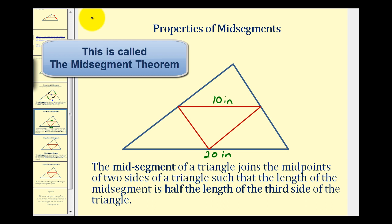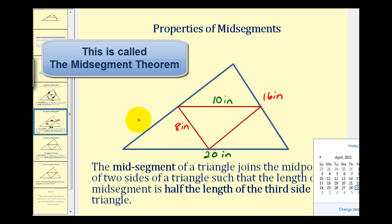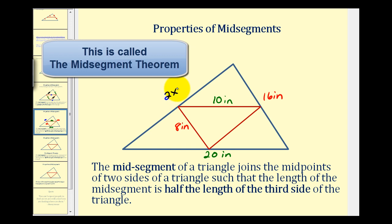And it also follows that if the length of this mid-segment was 8 inches, then the side of the triangle that's parallel to that would be twice that length, or 16 inches. So in general, if the length of this side was 2x inches, then the length of the mid-segment would be x inches.